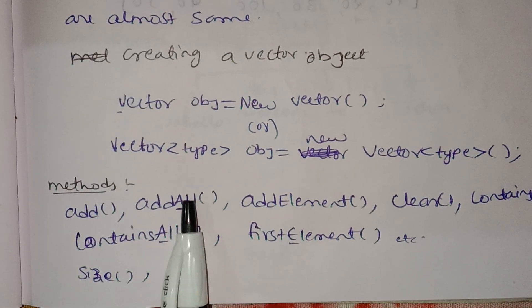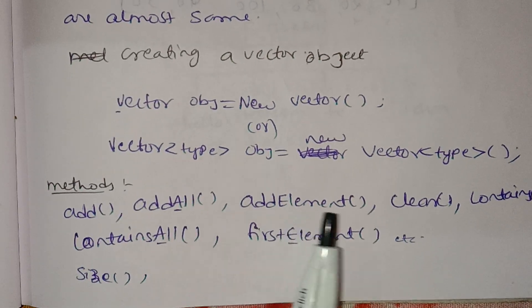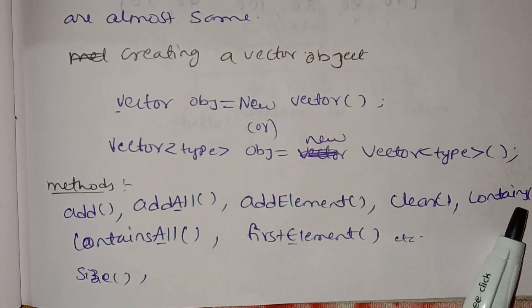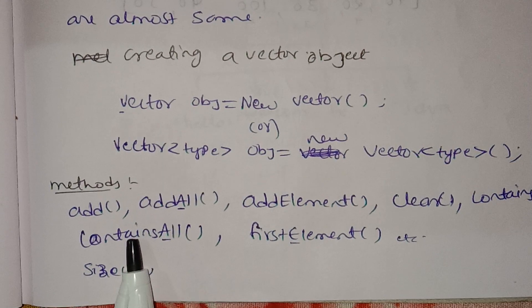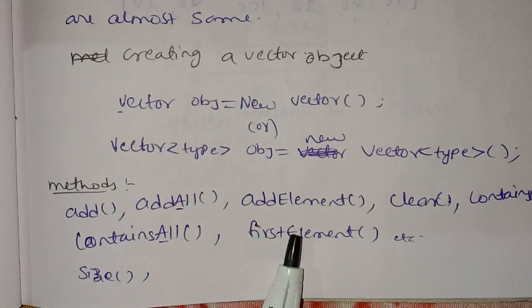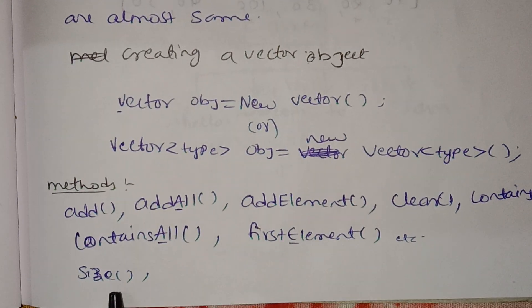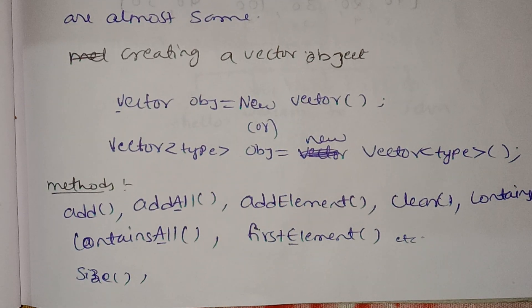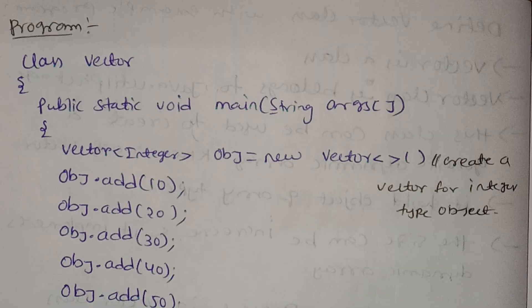The methods available in the Vector class include: add, addAll, addElement, clear, containsAll, and firstElement.